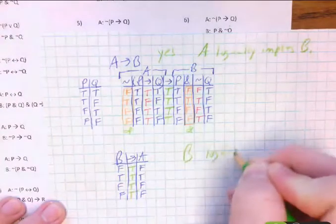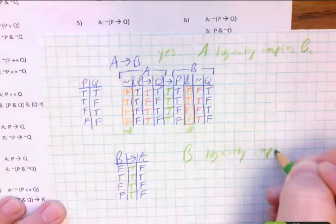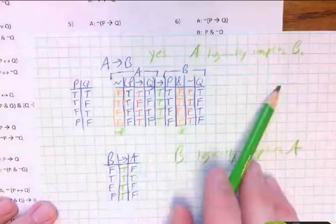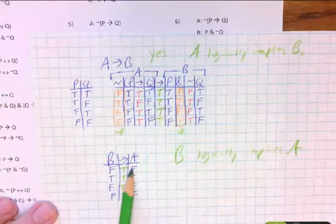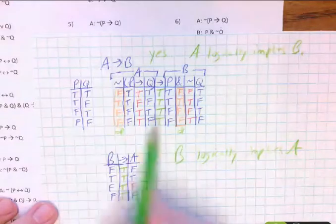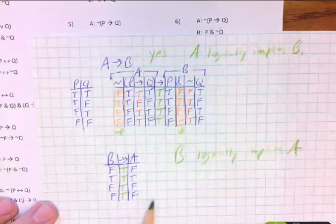B logically implies A. So if A logically implies B and B logically implies A, guess what? They're logically equivalent. That's when we said if it works both ways. If they're both tautologies, then it works both ways.